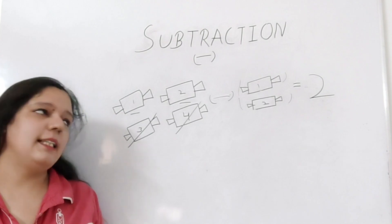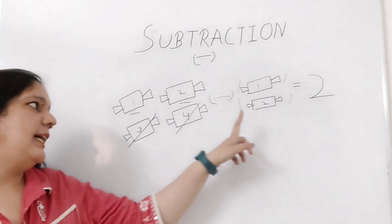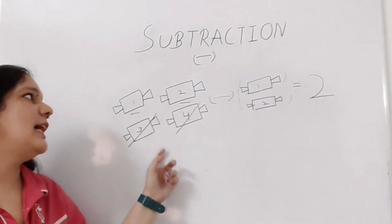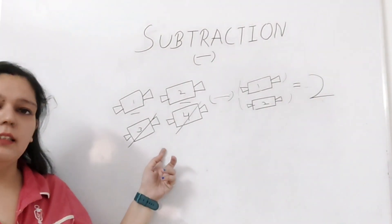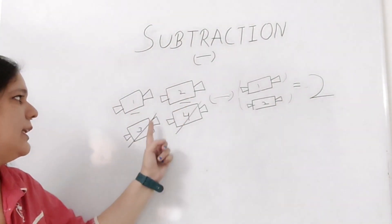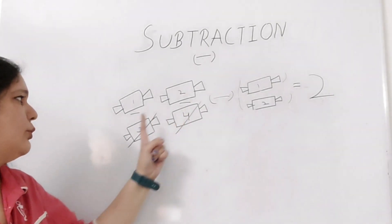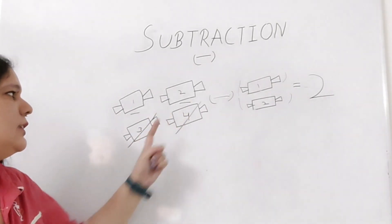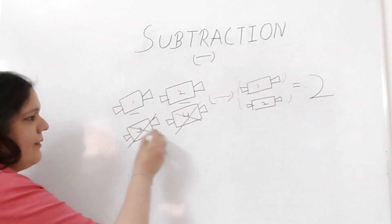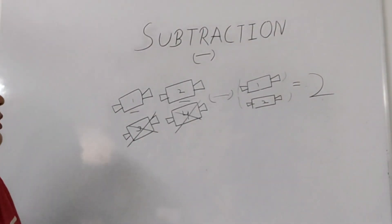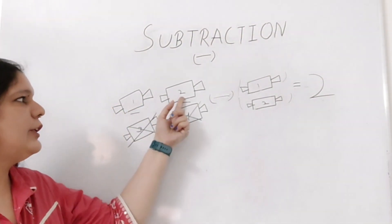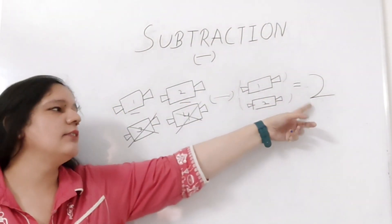You can even say: if I have four toffees and I give two toffees to someone, how many toffees do I have left? If I have four toffees — one, two, three, and four — and I give two toffees to someone, that means I will not have these two toffees with me. How many toffees do I have left? This is one and two, so the answer will be two.